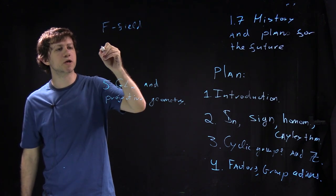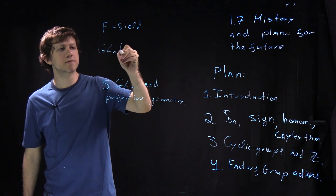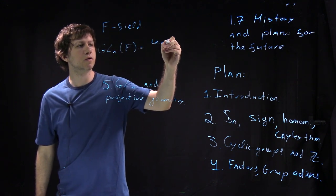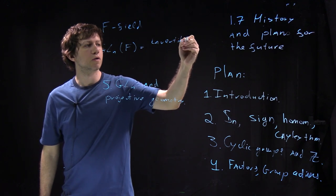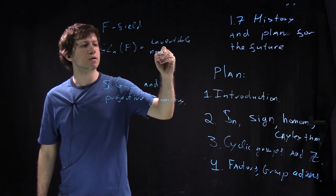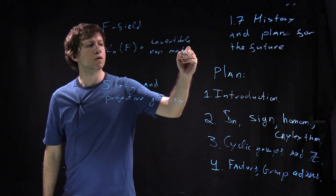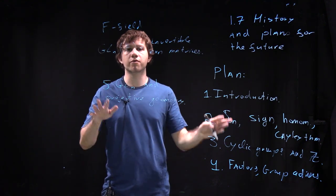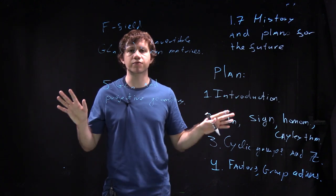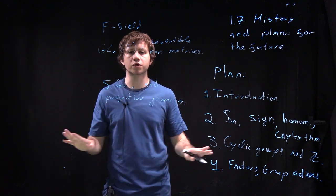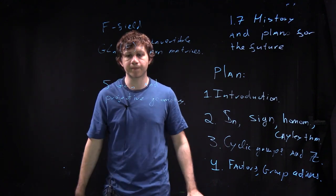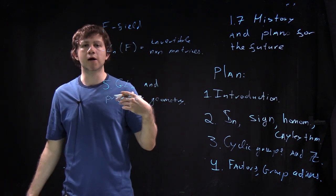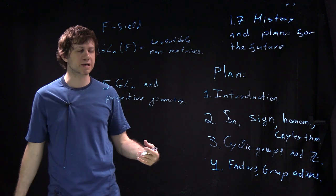Projective geometry. So here let me just say that if you have some field F then there is a following group GLN of F and these are just invertible n by n matrices. And this is a group you can multiply two matrices, you can invert a matrix, there is identity matrix, and it's not commutative so you cannot change the order.